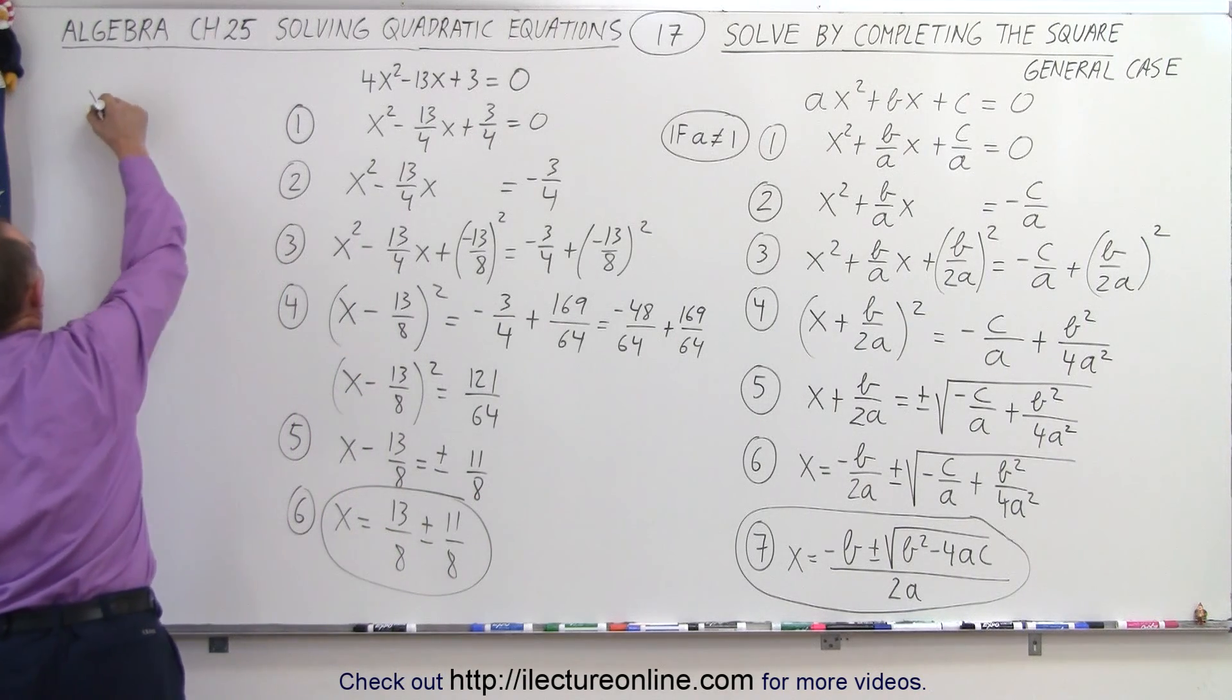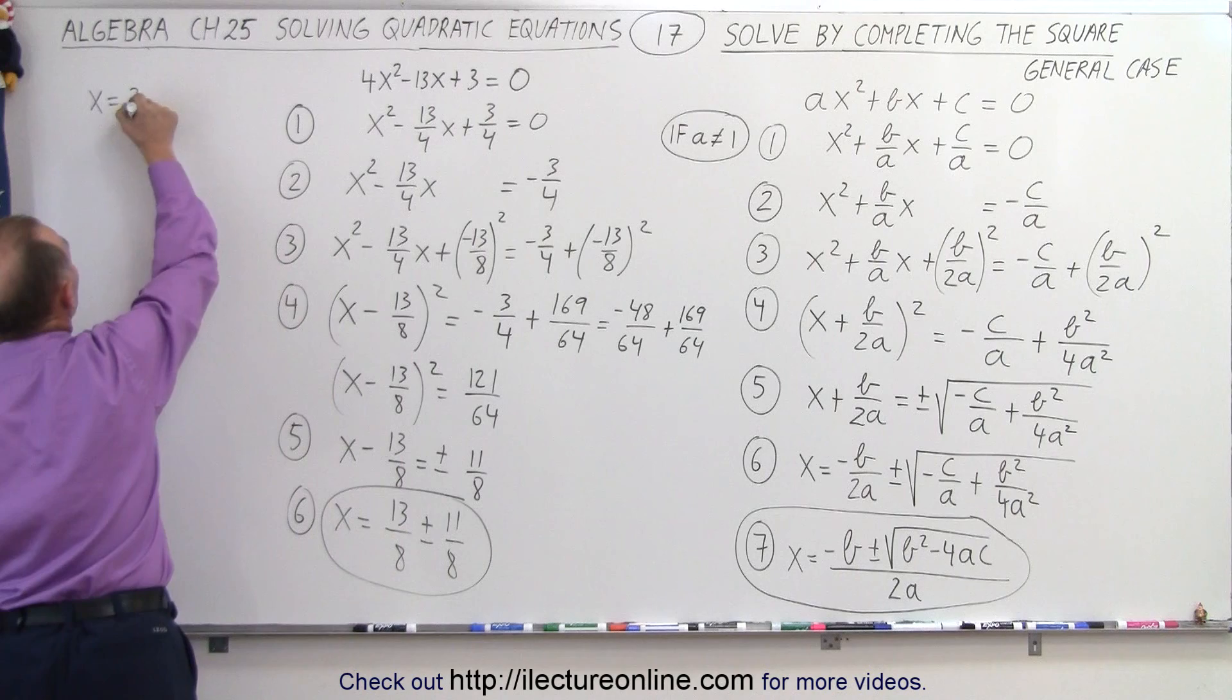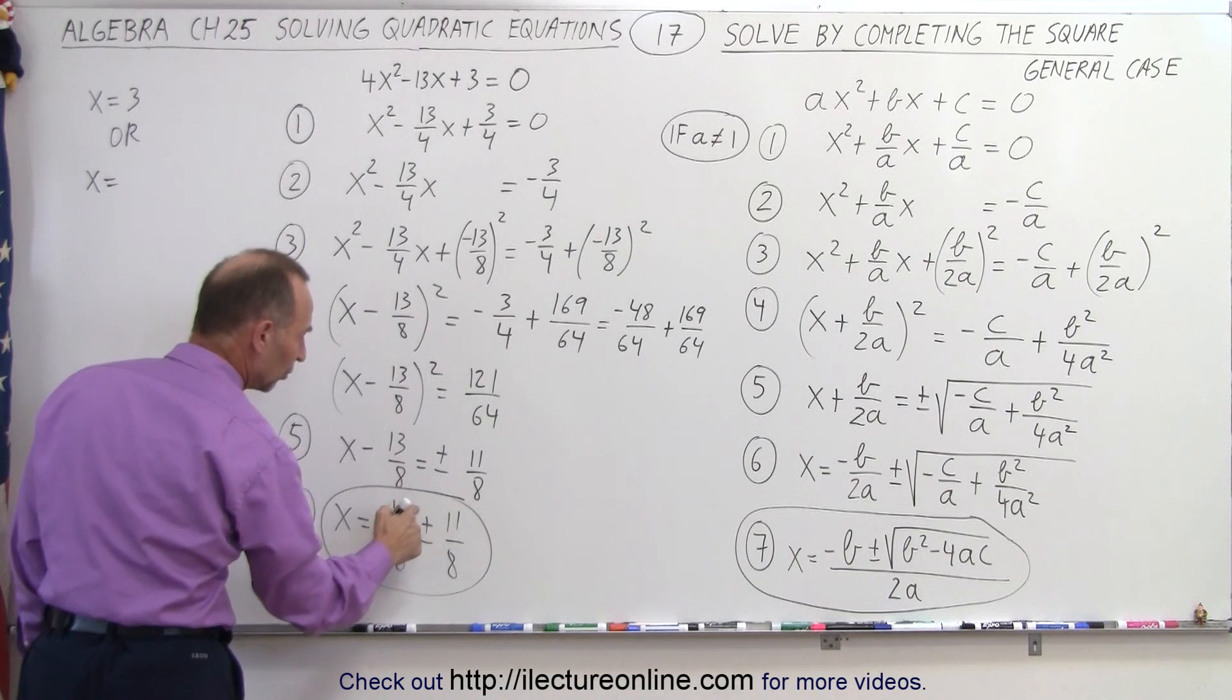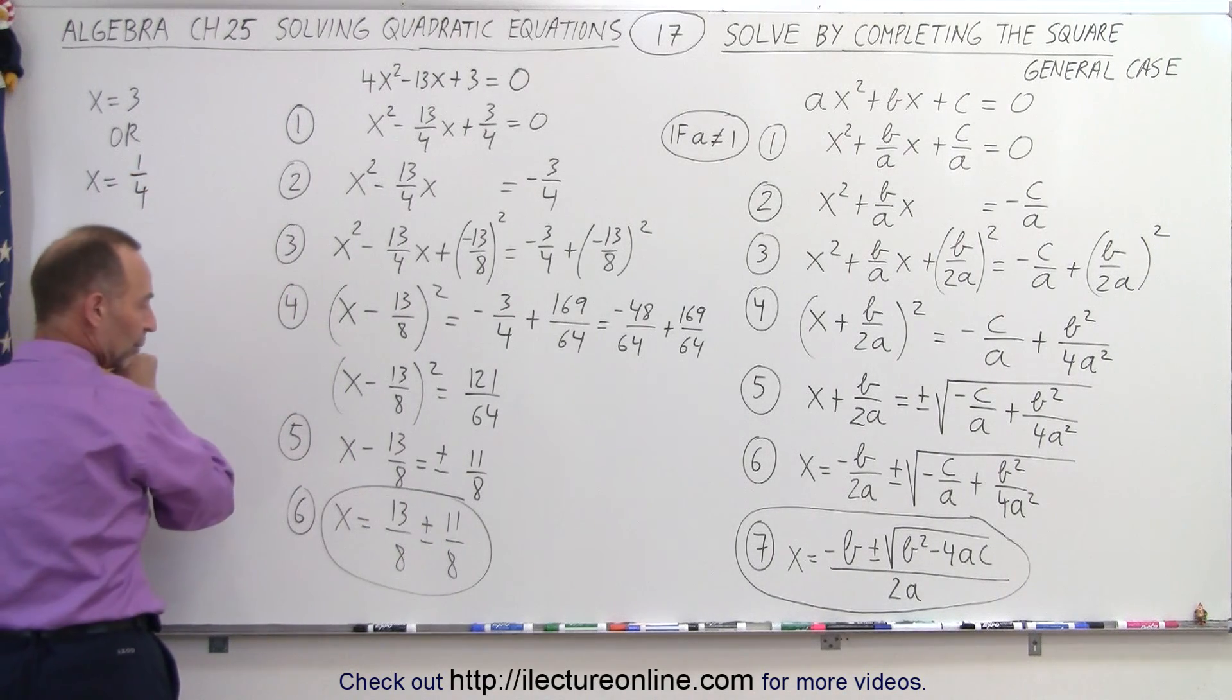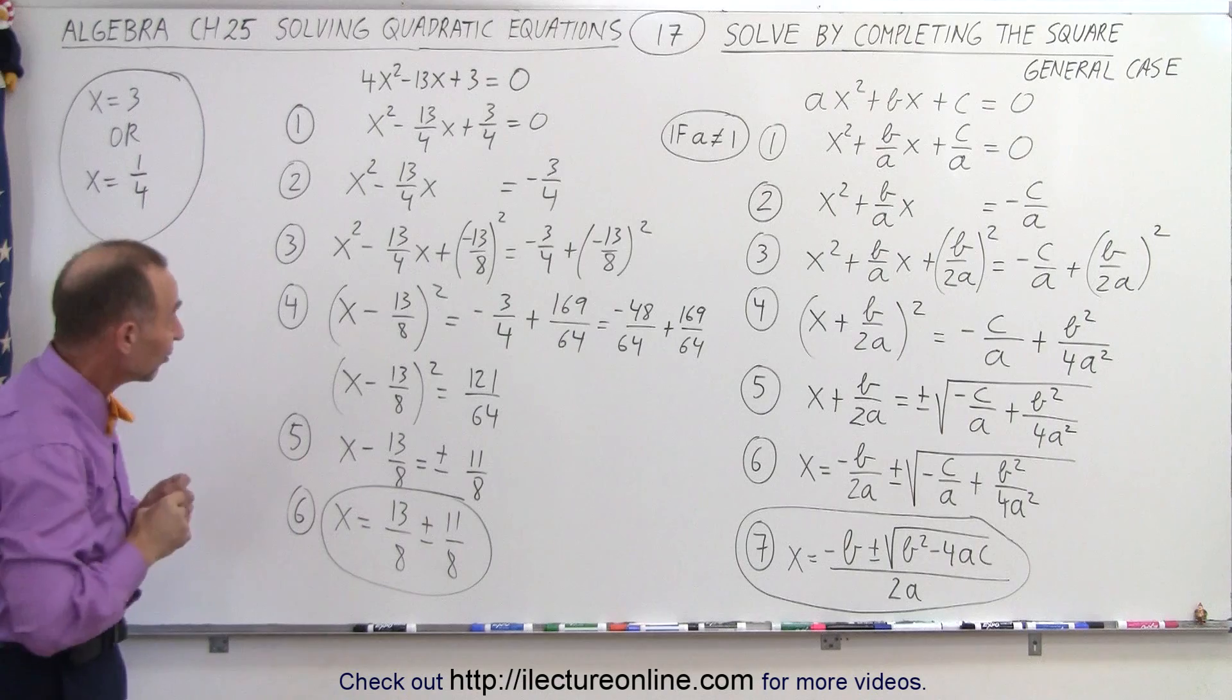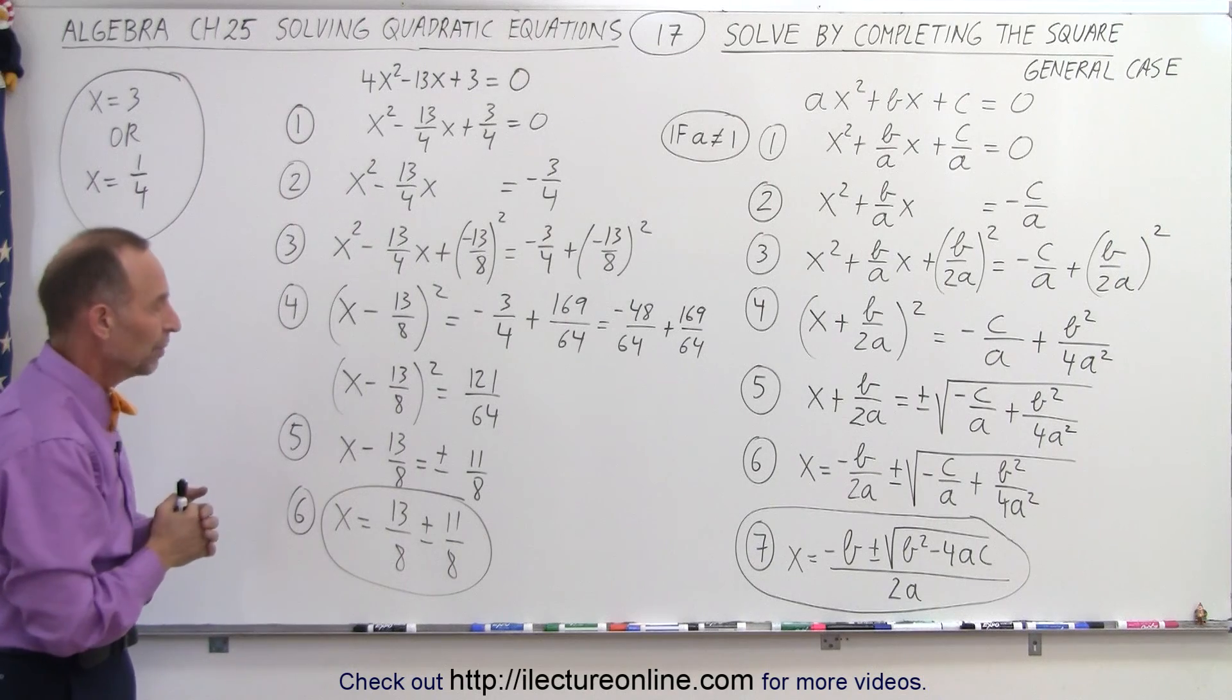So that means that x is equal to, we take the positive, 13 plus 11 is 24 divided by 8, which is 3. Or when we take the negative, x equals 13 minus 11, which is 2 over 8, which is 1/4. And that would be a positive as well. So here are the two actual solutions of our quadratic equation using the completing the square method.